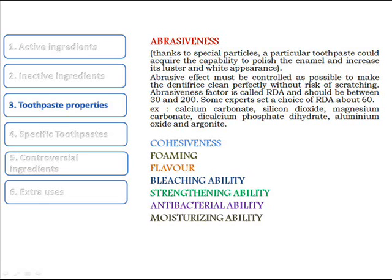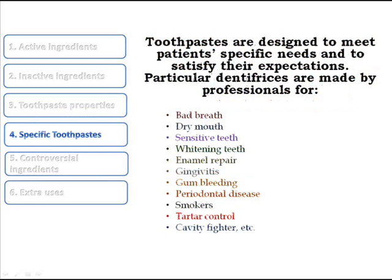Examples of abrasives include calcium carbonate, silicon dioxide, magnesium carbonate, dicalcium phosphate dihydrate, aluminum oxide, and aragonite. Among other properties there is cohesiveness, foaming, flow, bleaching ability, strengthening ability, antibacterial ability, and moisturizing ability. Toothpastes are designed to meet patient-specific needs and satisfy their expectations — particular dentifrices are made by professionals for bad breath, dry mouth, sensitive teeth, and whitening.